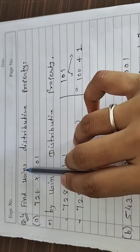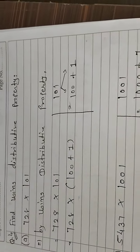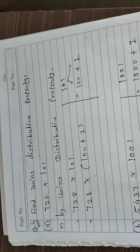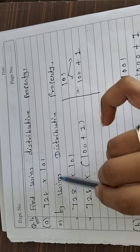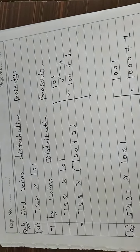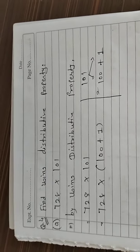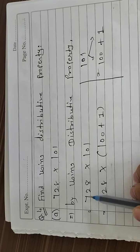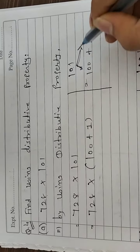Now question number 4: find the product using the distributive property. Let's take question A: 728 into 101. By using the distributive property, I will use it in every example. We will break 101 into two parts: 100 plus 1. So 728 × 101 becomes 728 × (100 + 1).